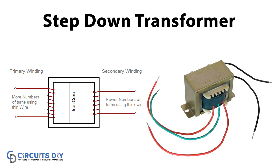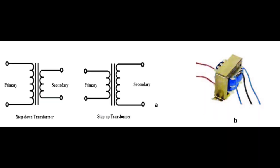Step-down transformers have numerous practical applications in electrical engineering, power distribution, and electronic devices. In the electrical power distribution network, step-down transformers are used to reduce the voltage from high transmission levels to lower levels suitable for industrial, commercial, and residential use. They convert high voltage electricity from transmission lines to lower voltage levels for safer and more efficient distribution to consumers. Step-down transformers are also widely used in household appliances and power adapters for laptops, cell phones, and other electronic devices.